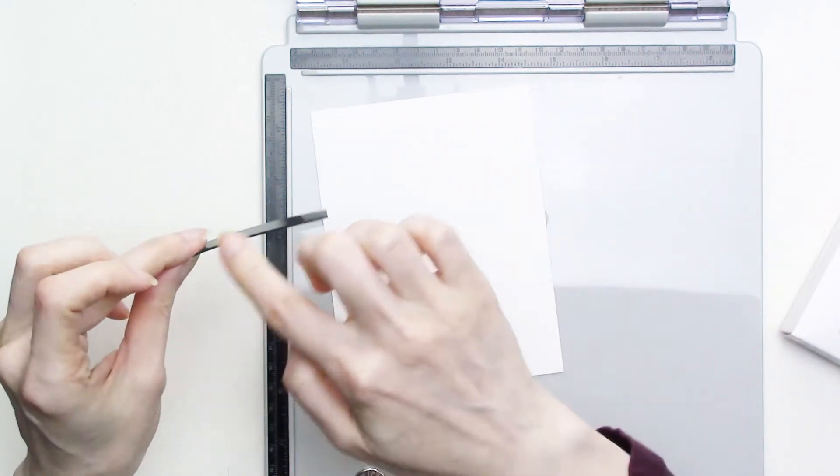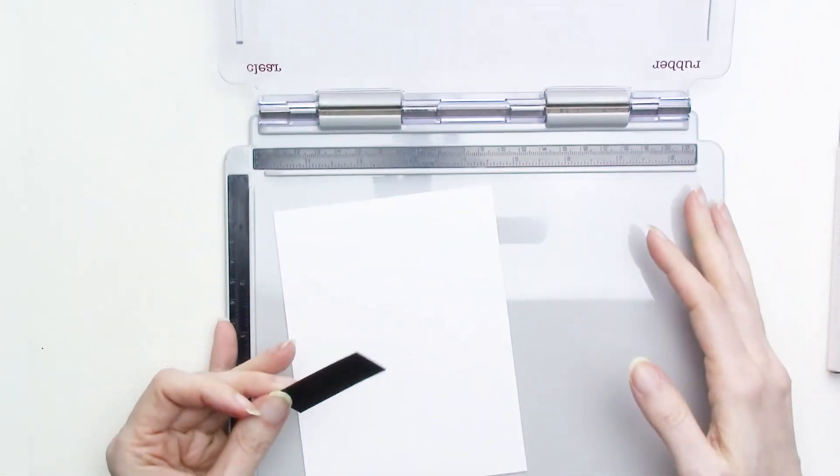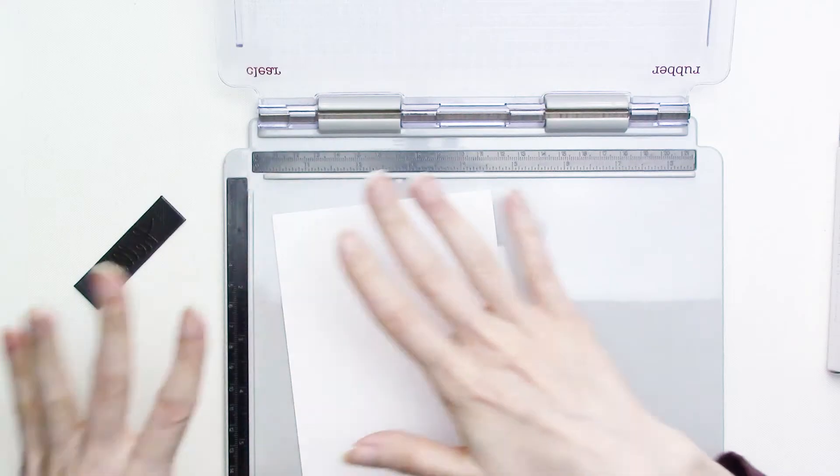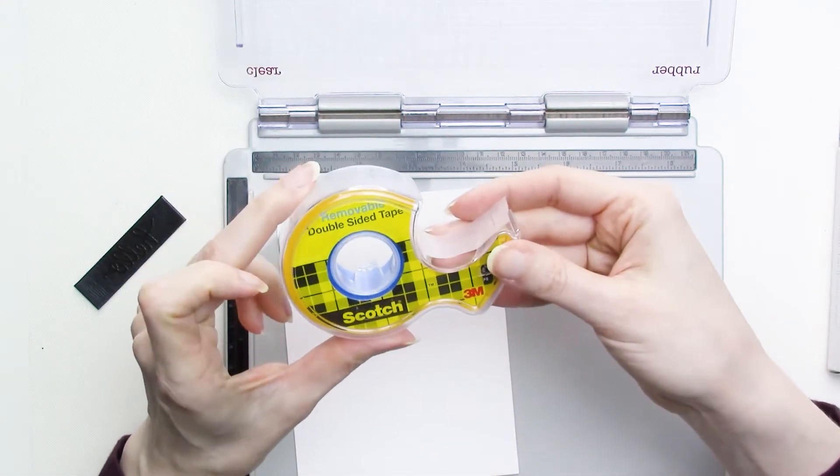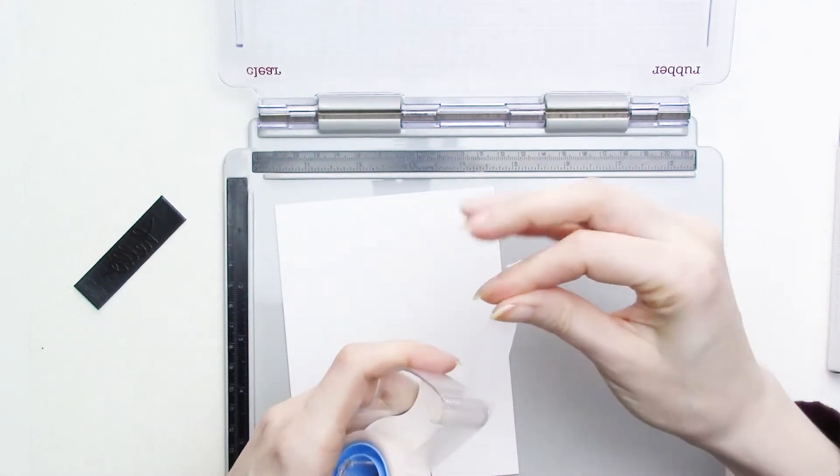But what if you want to use the stamps with a platform and don't have mounting foam or something like it? I'll be showing you how you can use the stamps with a platform even if you don't have mounting foam. So instead of using something to make the stamp thicker, we're going to be using something under the surface that we're stamping on, in this case cardstock, to help lift the surface up to meet the stamp.